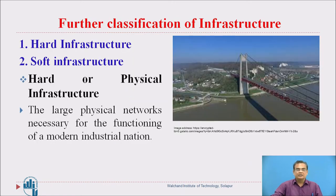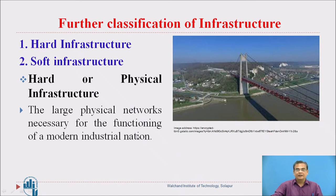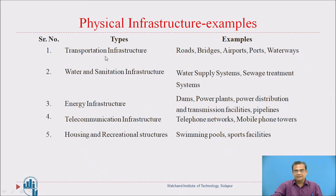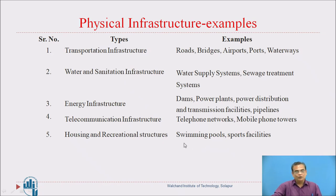There is one more classification: hard infrastructure (or physical infrastructure) and soft infrastructure. Hard infrastructure refers to the large physical networks necessary for the functioning of a modern industrial nation — bridges, roads, railways, telecommunication towers. Examples include: transportation infrastructure (roads, bridges, airports), water and sanitation (water supply systems), energy infrastructure (dams, power plants), telecommunication infrastructure (telephone networks), and housing and recreational structures (swimming pools).